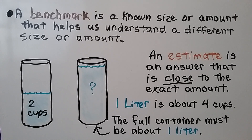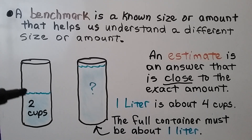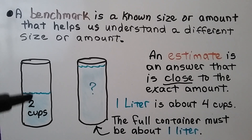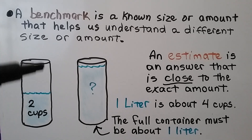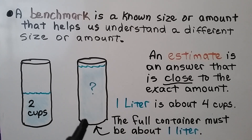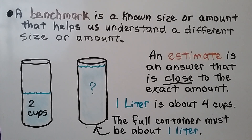An estimate is an answer that is close to the exact amount, and one liter is about four cups. If this container is halfway full and that's two cups, then the other half must also be two cups. Two plus two is four, so the whole thing would be approximately four cups — and one liter is about four cups, so the full container must be about one liter.